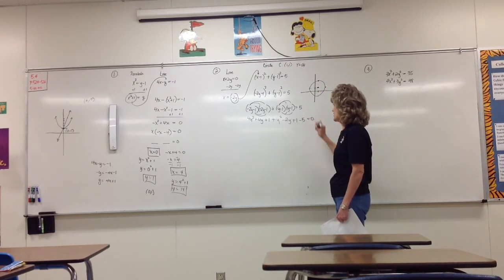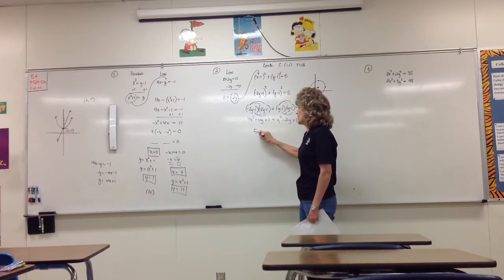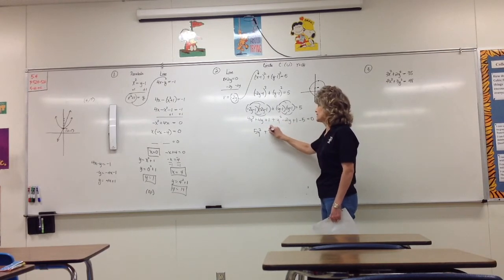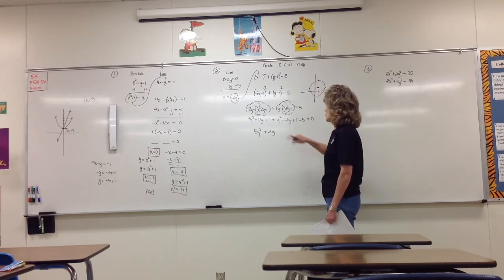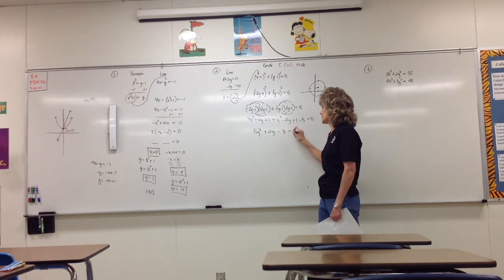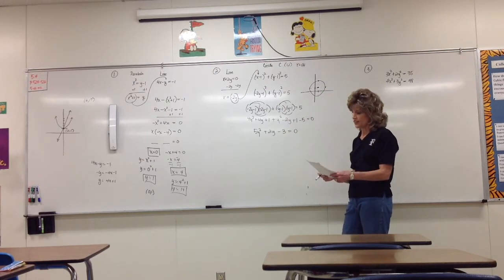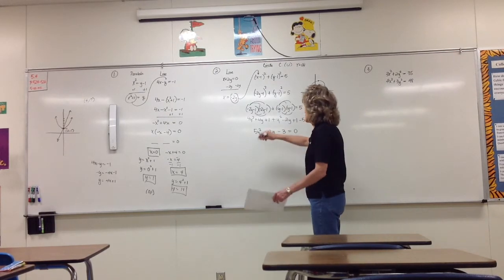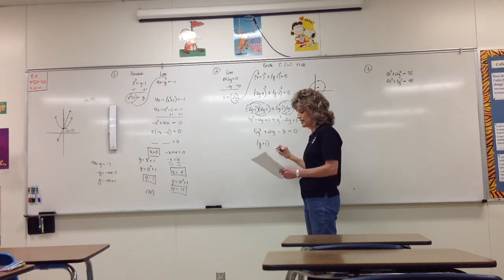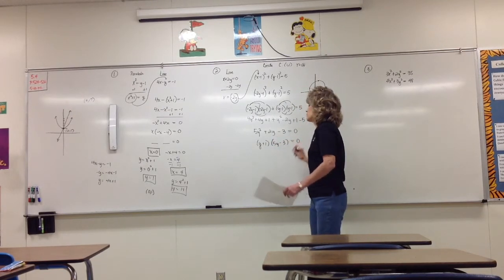Combining like terms: 4y squared plus y squared gives 5y squared; 4y minus 2y gives 2y; 1 plus 1 minus 5 gives negative 3. So we have 5y squared plus 2y minus 3 equals zero. This factors to (y plus 1)(5y minus 3) equals zero.